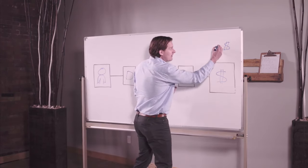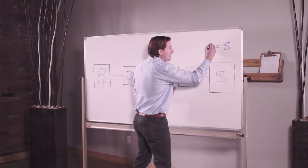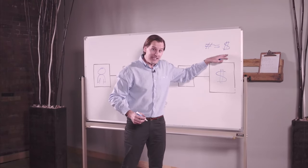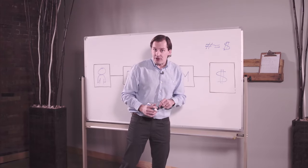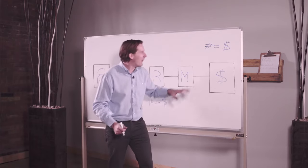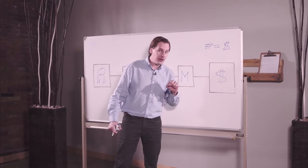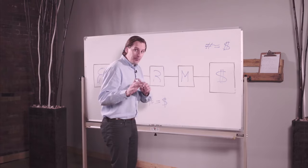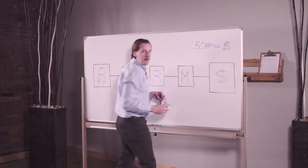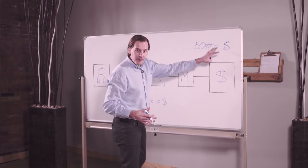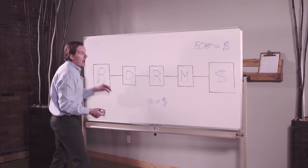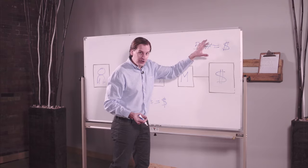Figure out what your perfect day looks like and establish a number to that. Then we can work backwards and figure out how many deals you actually have to process in your business to create the income you need to lead the lifestyle you want. For the purpose of this video, we're going to use a round number — we're going to say we want to get to 50 additional transactions coming into your business. Whatever you have right now is your baseline, and we're going to add 50 transactions on top of that.